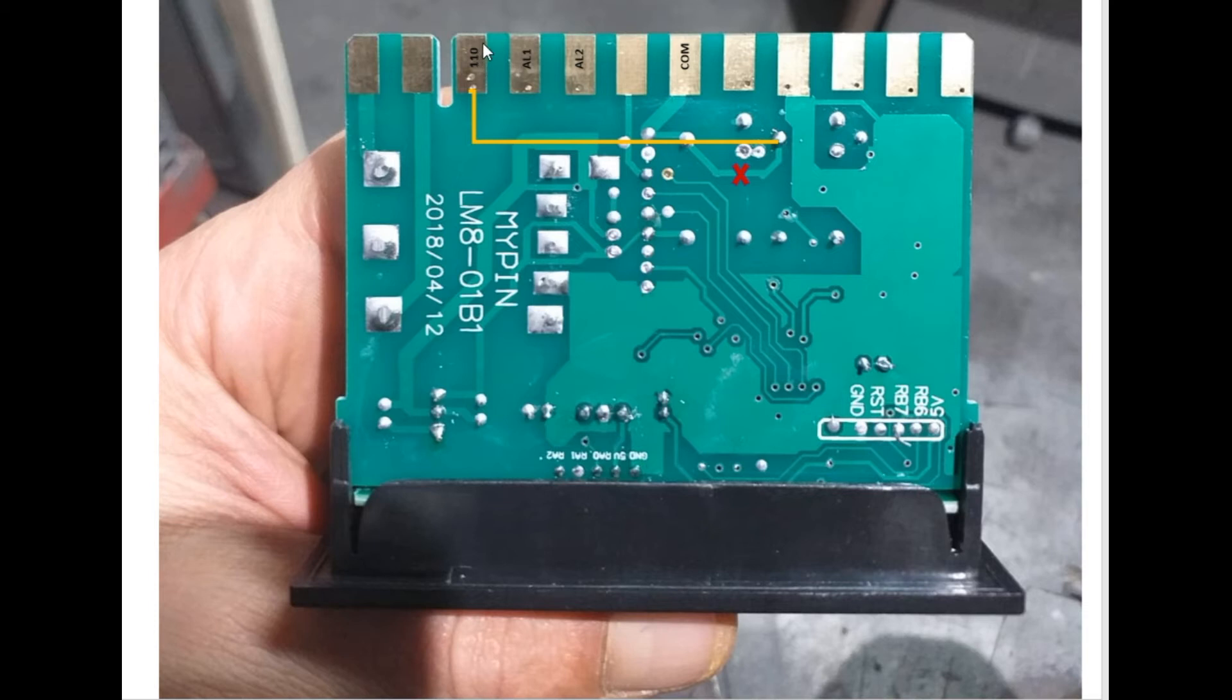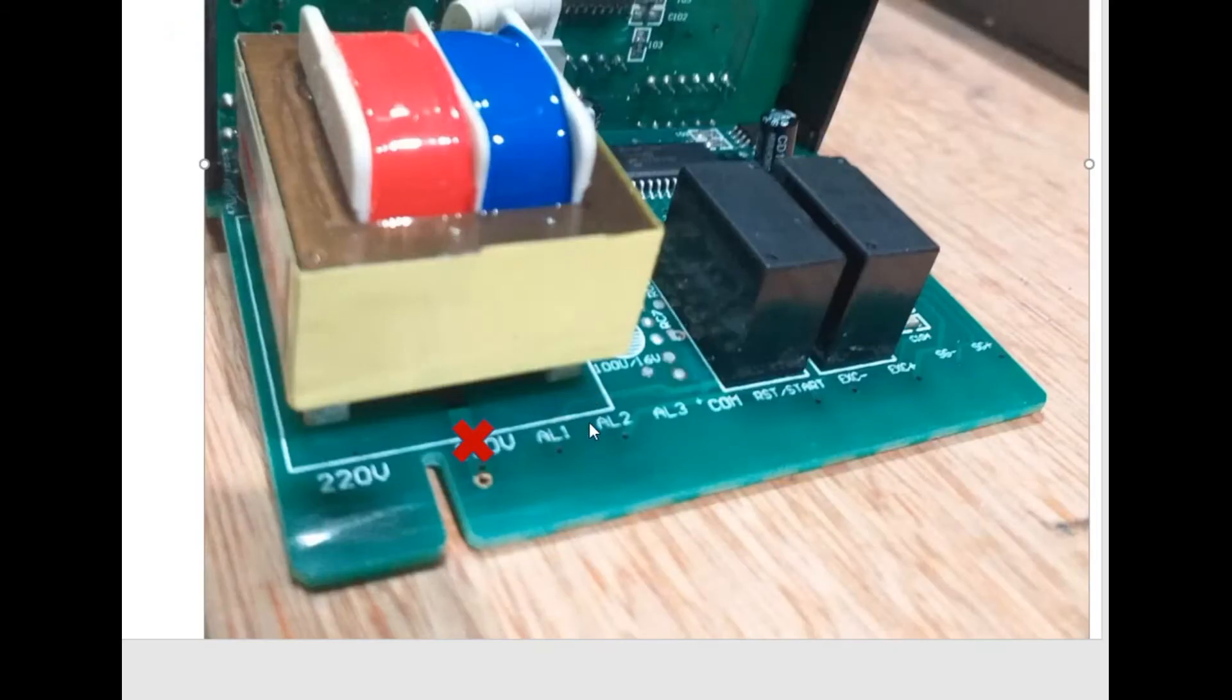So this is the 110 volt. So this is what I have done. Let me move to page number four and show you from the other side. So guys, as you see, this is the 110. I cut it from here and I connect the common for L1 to this board.